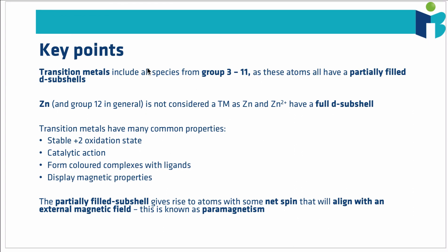So key points to take home from this video, we saw that transition metals, where everything from group 3 to 11, they will have a partially filled d subshell. For that reason, zinc is not a transition metal, and neither is anything else in group 12, because they always have a full d subshell. We discussed some common properties of transition metals: they often adopt a plus 2 oxidation state that's stable for all transition metals, they often are able to catalyse reactions, they form coloured complexes with ligands, and they display magnetic properties. Specifically, those partially filled subshells always give rise to some overall net spin of electrons that can align with an external magnetic field, and that process is known as paramagnetism.